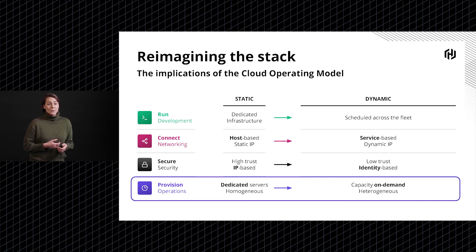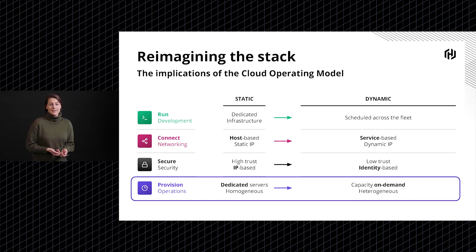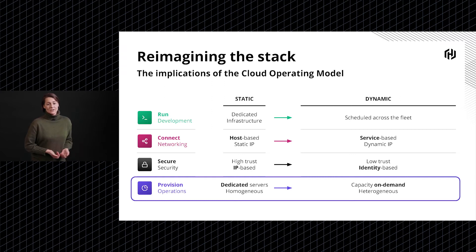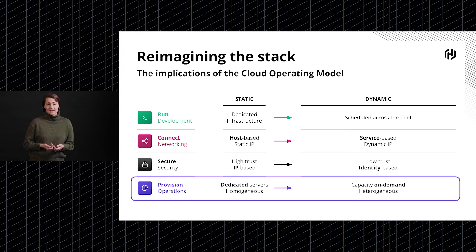Many organizations start with the provisioning layer and look at how they will build blueprints for the infrastructure that will underpin their applications, and do so in a way that embraces the traits of dynamic infrastructure — large quantities of services, frequently provisioning and deprovisioning, and embracing a variety of different providers and services from many different infrastructure types.